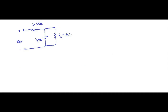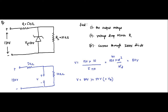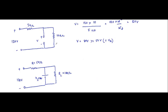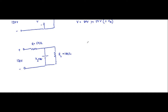This circuit is a fixed-source, fixed-load type because both the input voltage and the load resistance are fixed. Therefore, the output voltage — the voltage across the load resistor — equals the zener breakdown voltage, which is 50 volts.